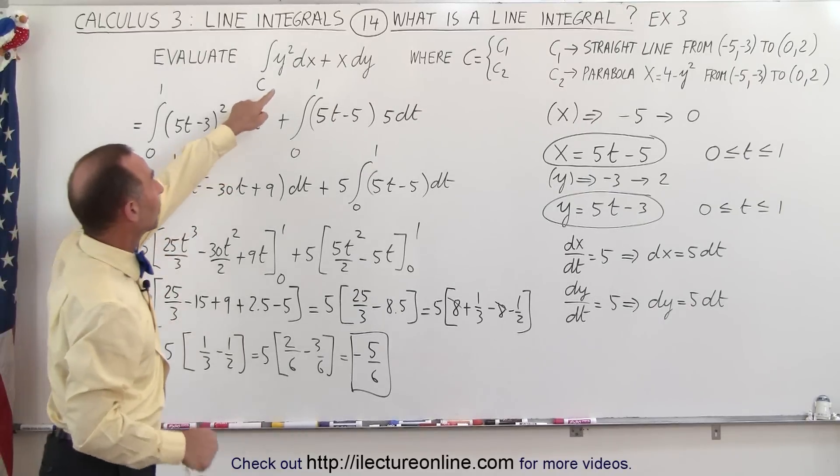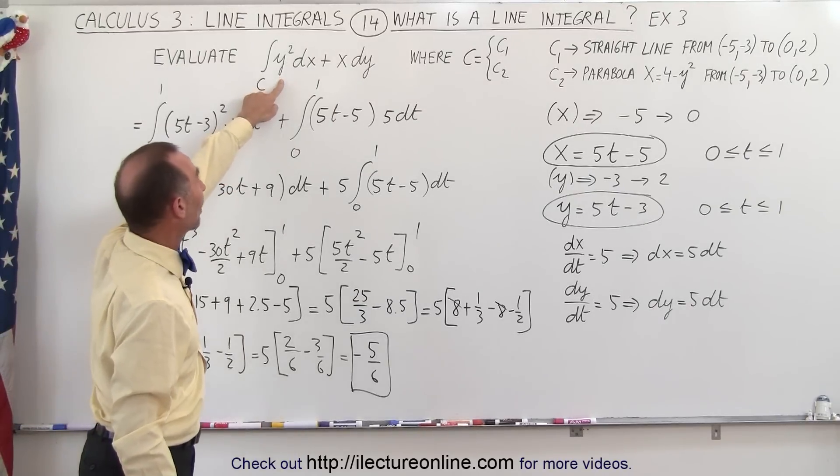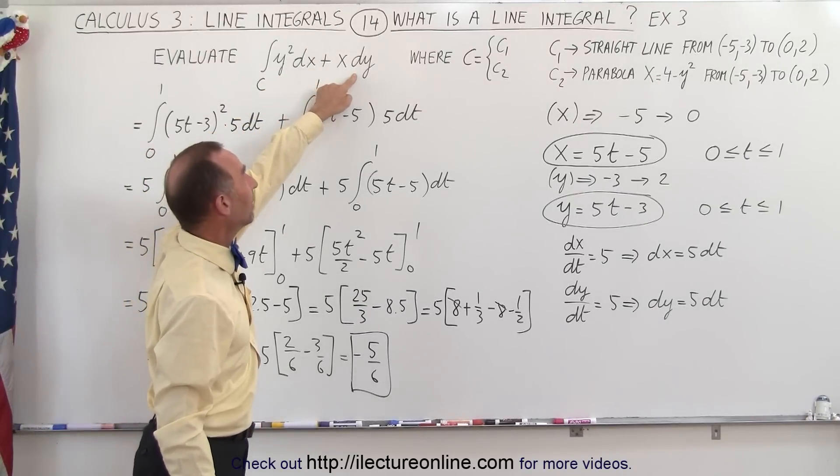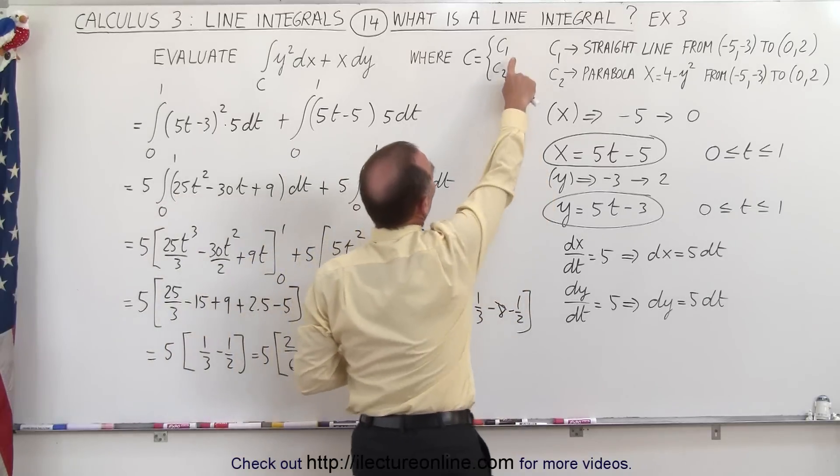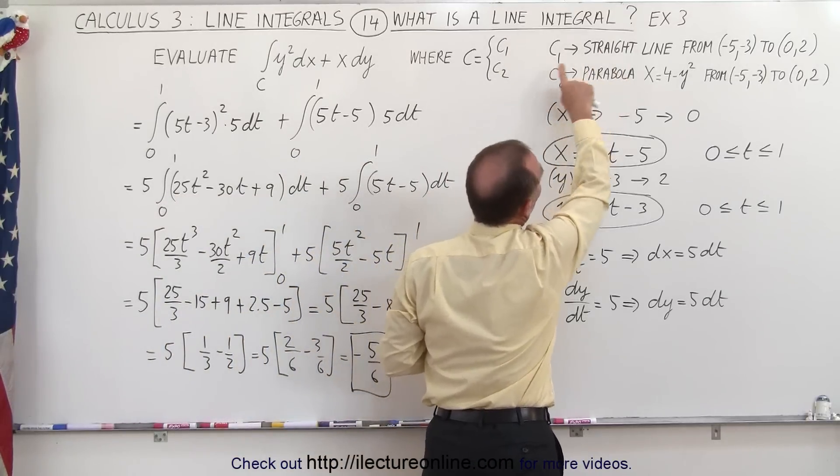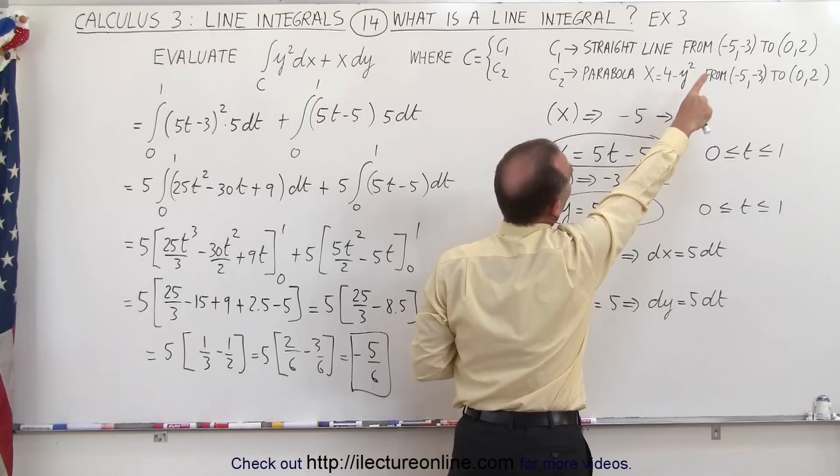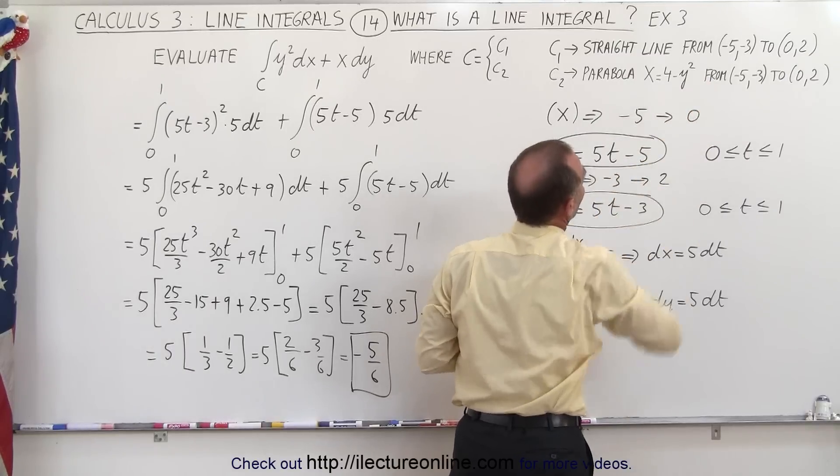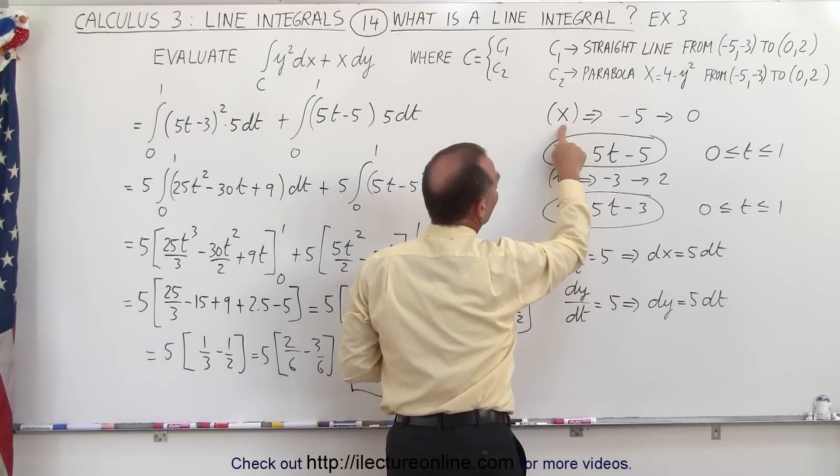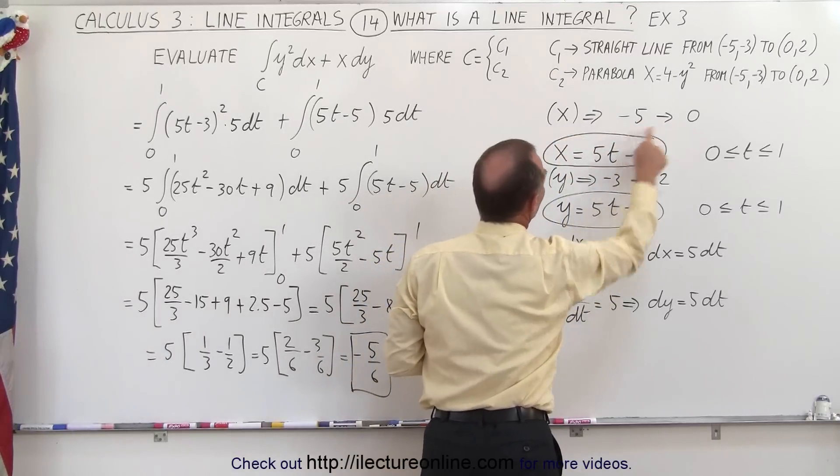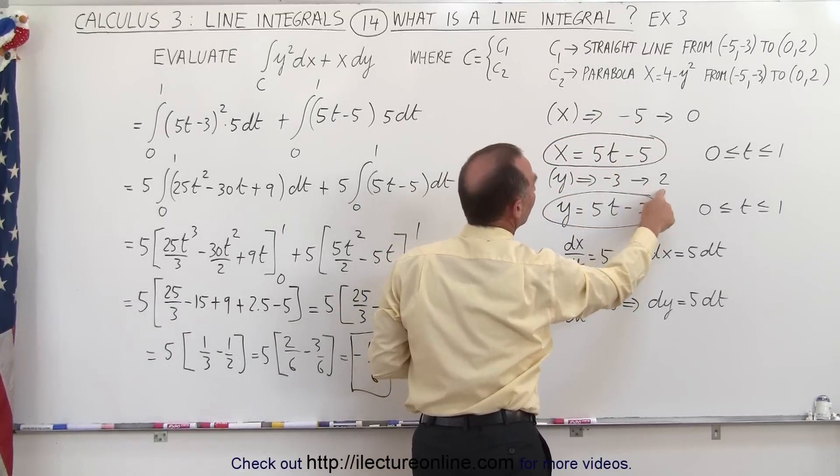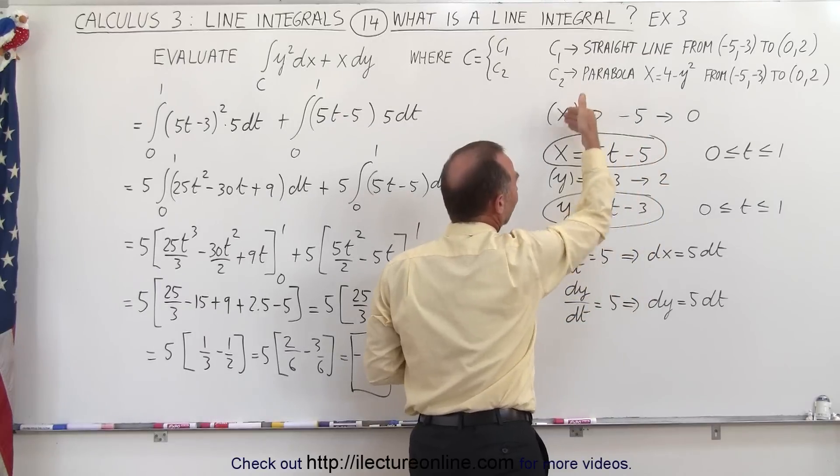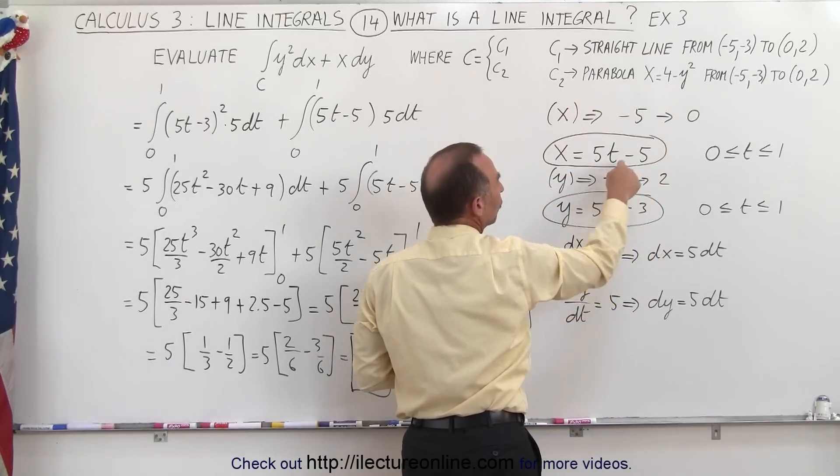Again, we start out with an integral that had y squared dx plus x dy. We had to integrate using the curve C1, where C1 was a straight line from minus 5 to minus 5 minus 3 to 0, 2. Our x therefore changes from minus 5 to 0, and our y changes from minus 3 to 2. So we want to convert x and y to a parametric equation using t.